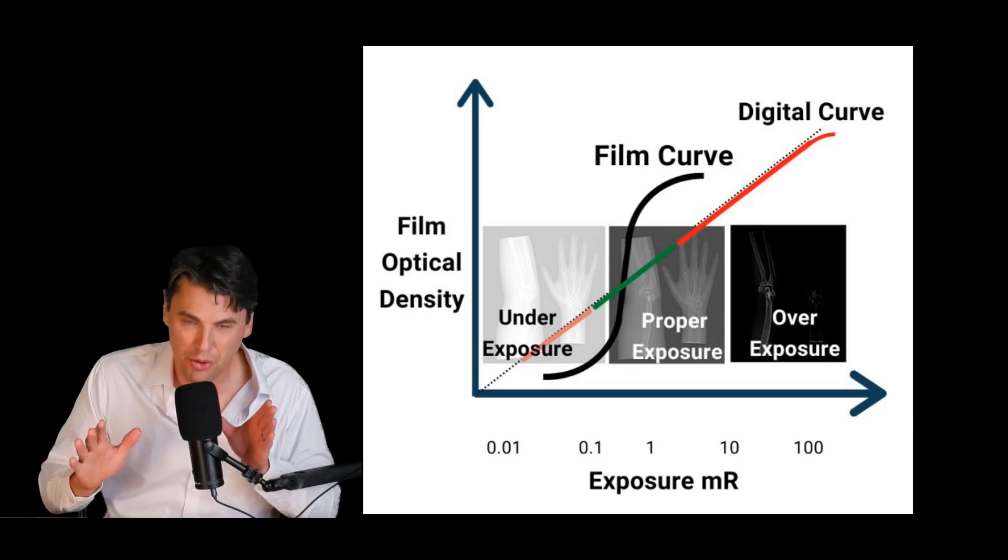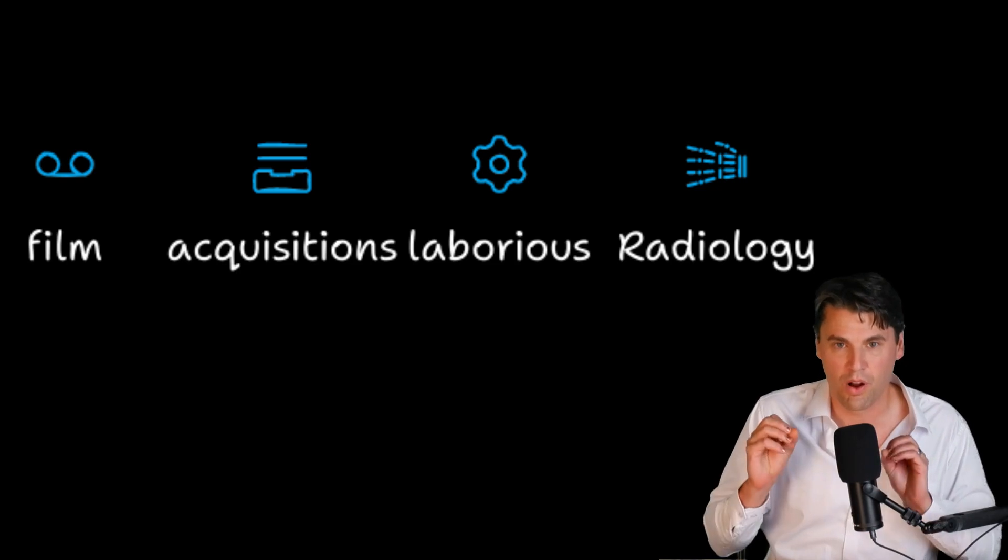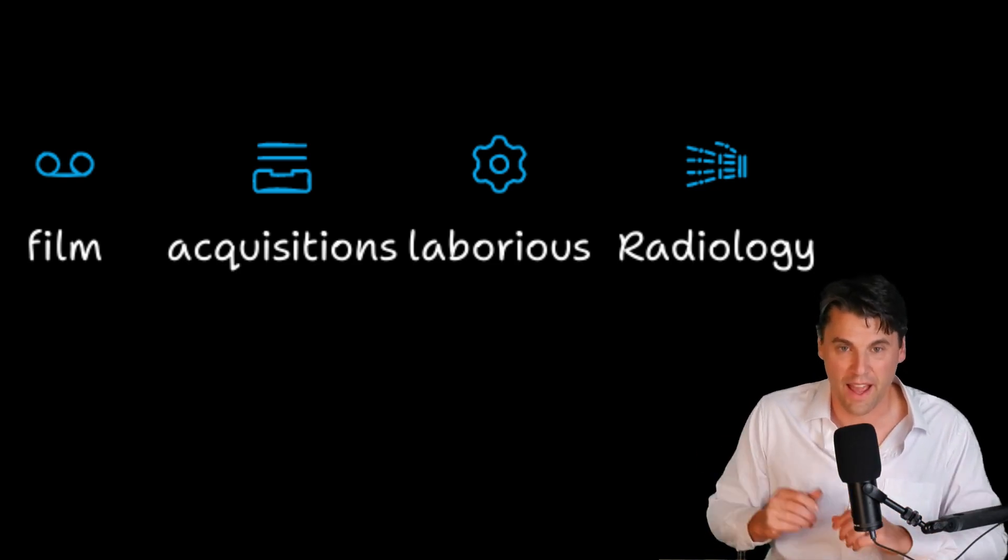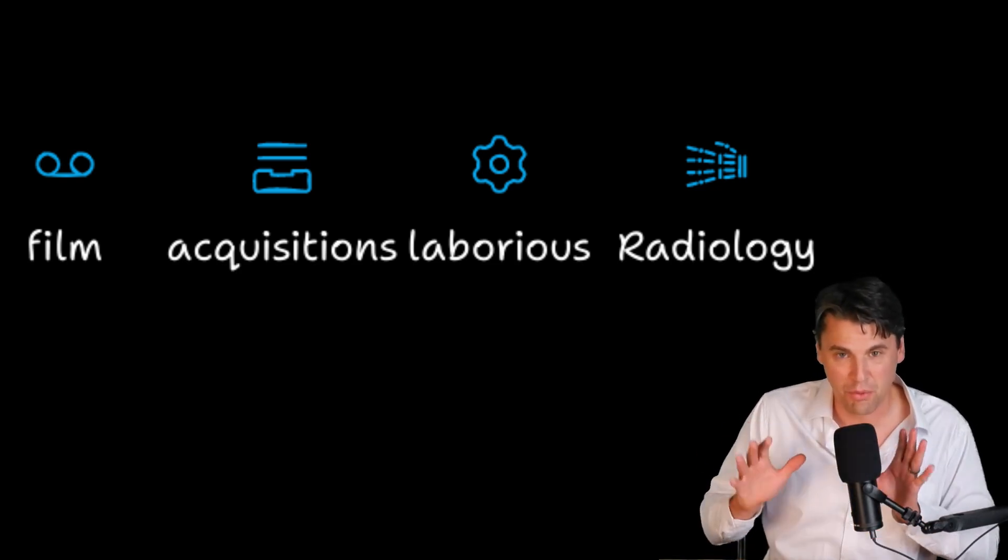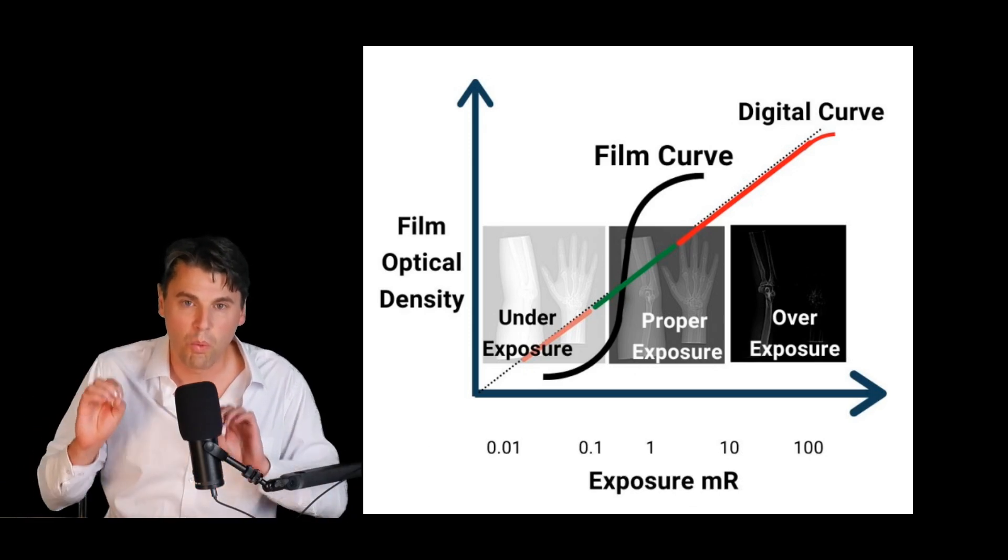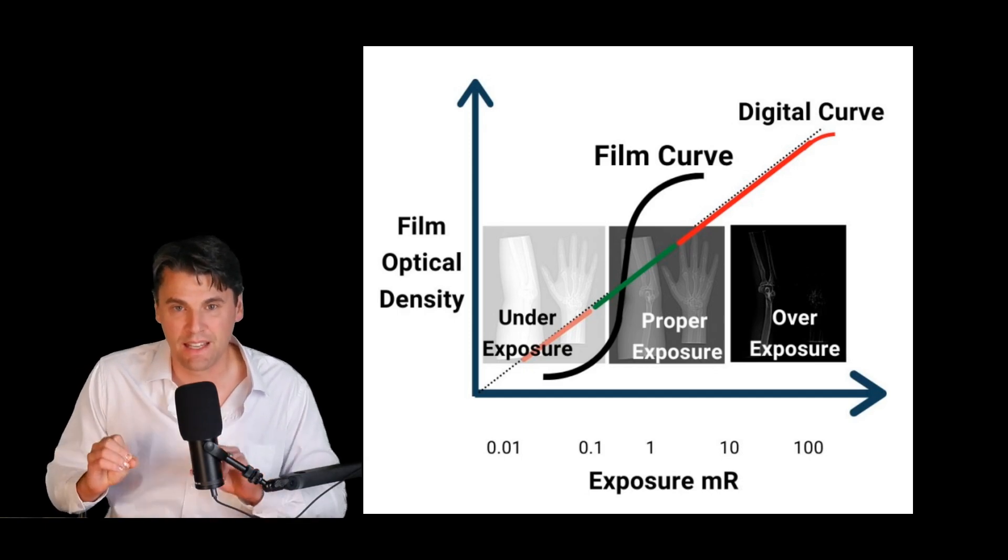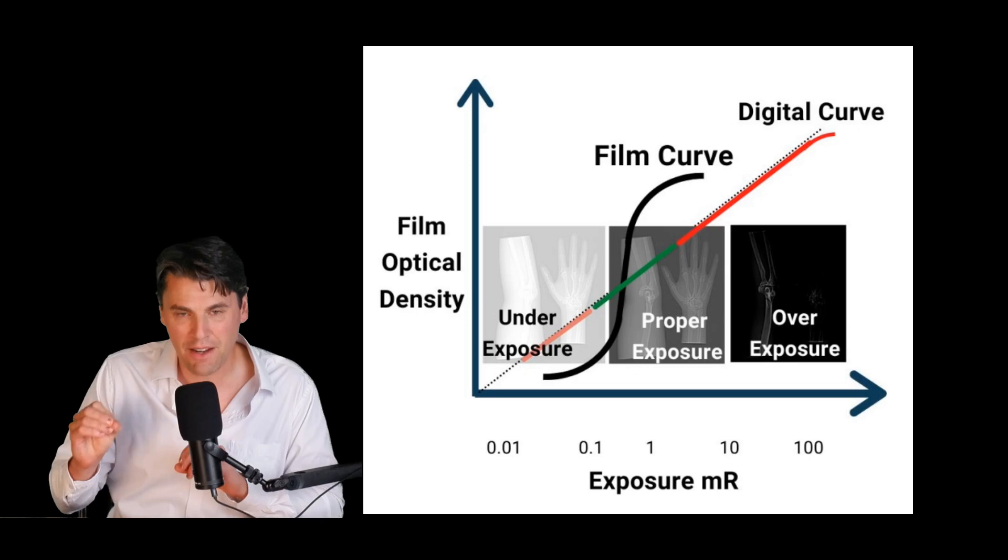Back in the good old days, or the bad old days depending on how you viewed it, film was used for all the acquisitions in your x-ray department, and it was quite laborious, the film processing and everything. One advantage, however, was film had a built-in exposure monitoring system.